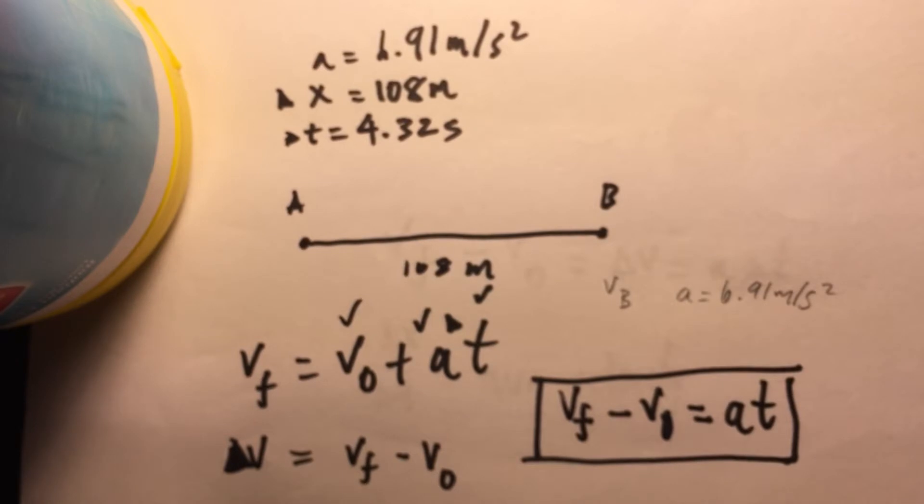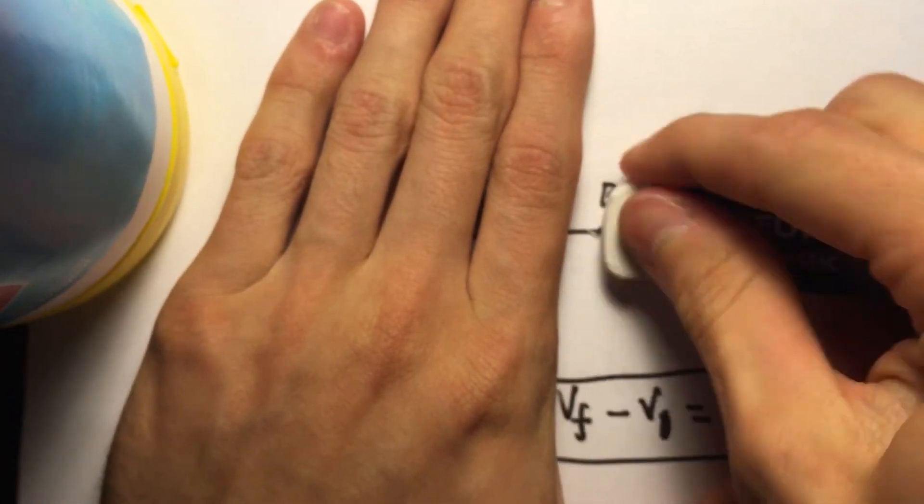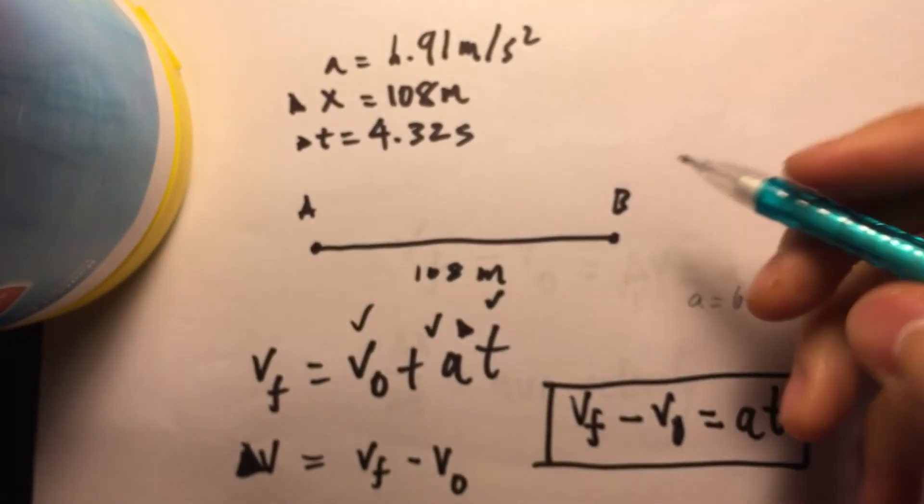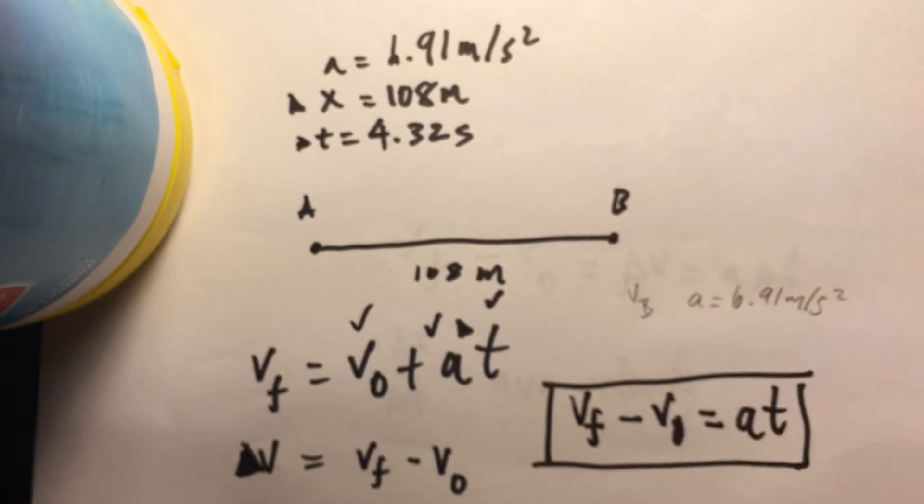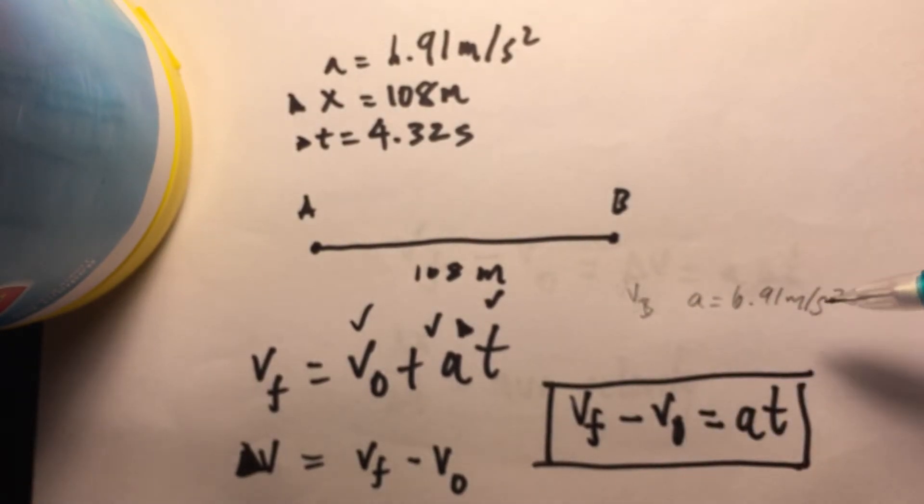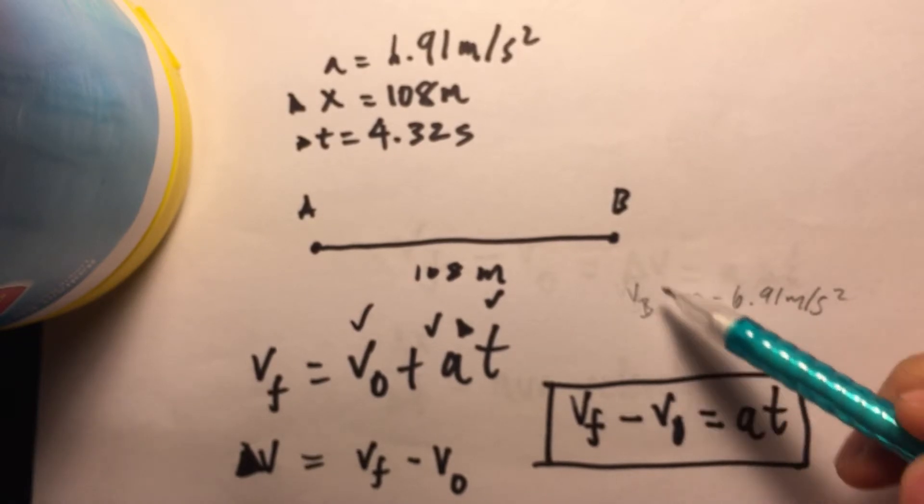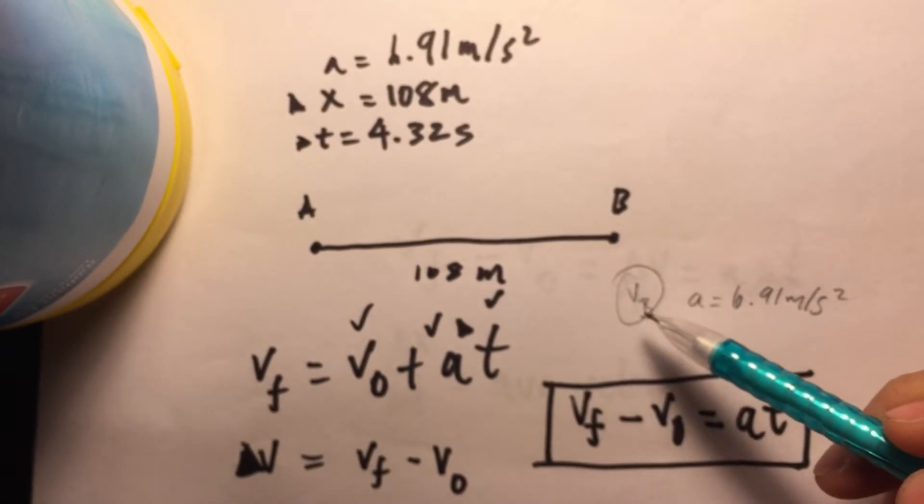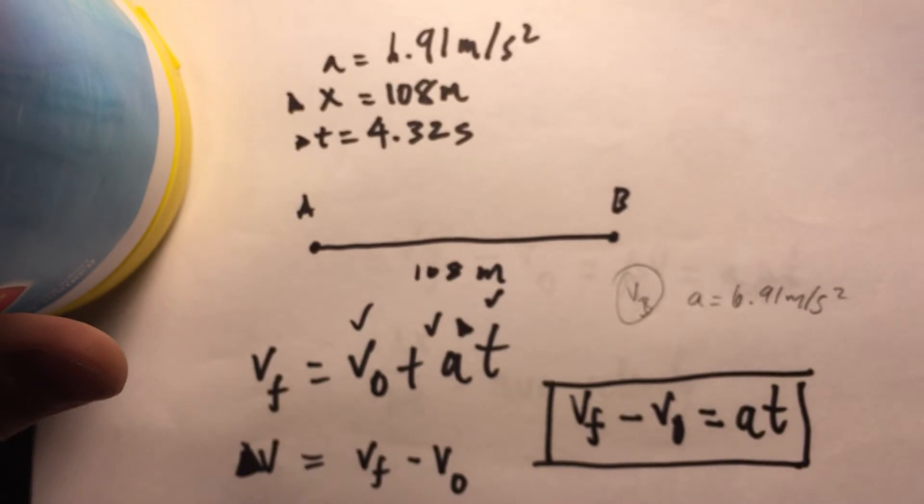Now, the only thing is for part two of this video, we have vb, and we have an acceleration of 6.91 meters per second squared. They actually give us acceleration, and we have to find v sub b. That's what we have to find.